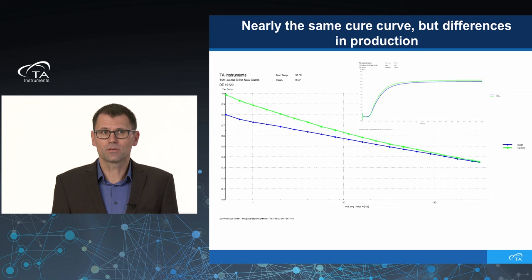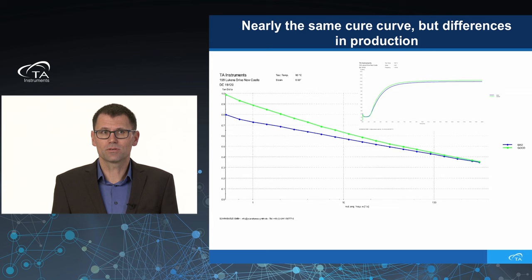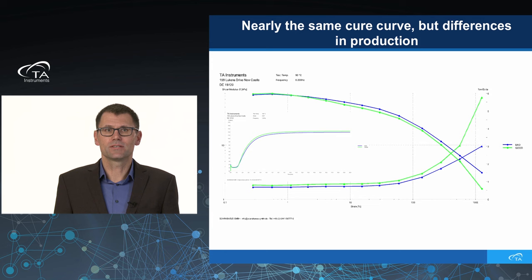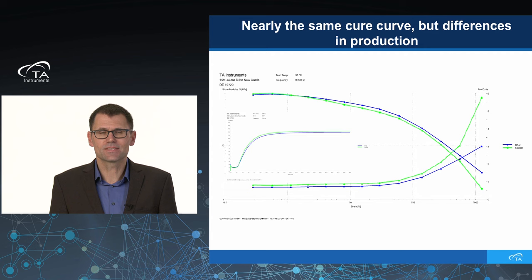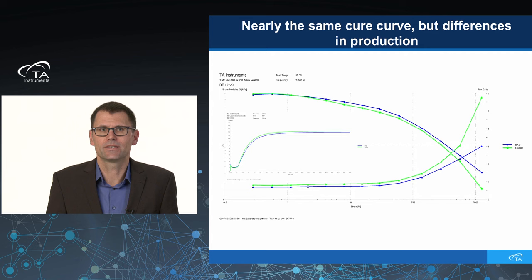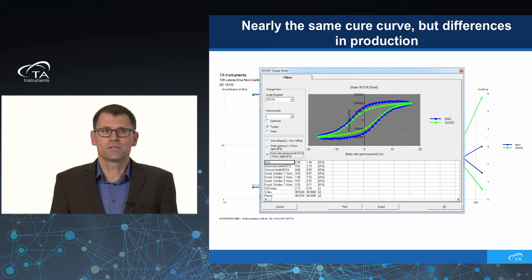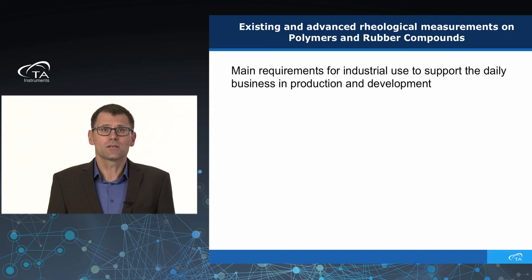When we plot tangent delta, at low frequency we see differences between the two compounds despite their nearly identical cure curves. And in the LAOS test, you see big differences in tangent delta on the right side. This was exactly the problem the customer had in extrusion — a completely different die swell — which was not visible on the standard MDR test. That is why this customer now uses an RPA Flex for additional quality control of his compounds. You can also plot stress over strain rate for compounds and see differences in long-chain branching.